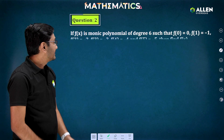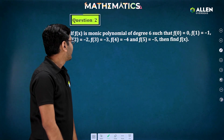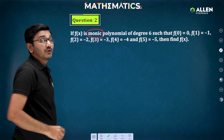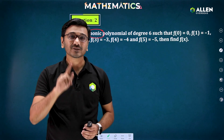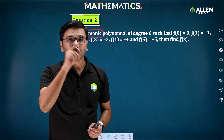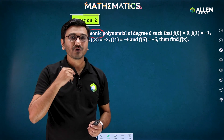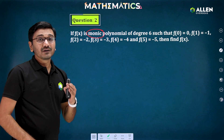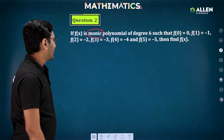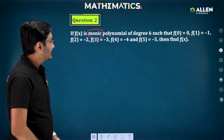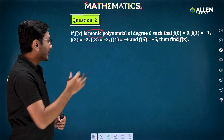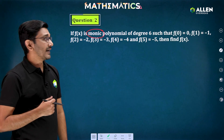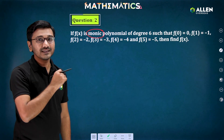Now let's see another question based on the remainder theorem and factor theorem. f(x) is a monic polynomial — meaning the highest degree term has coefficient 1 — of degree 6, such that f(0) = 0, f(1) = minus 1, f(2) = minus 2, f(3) = minus 3, f(4) = minus 4, and f(5) = minus 5. The question is to find the function f(x).